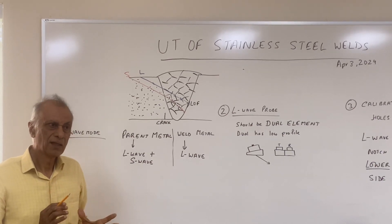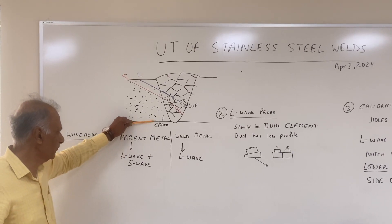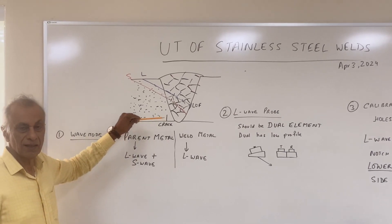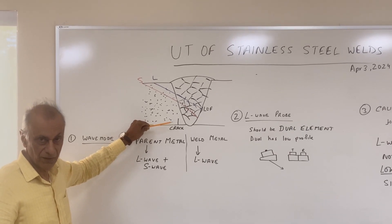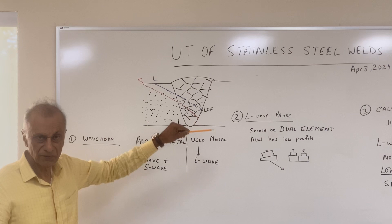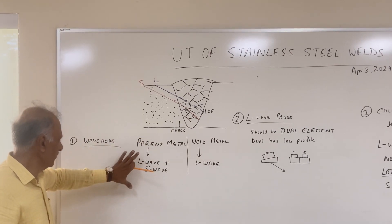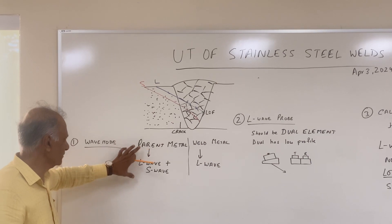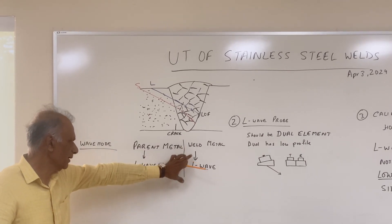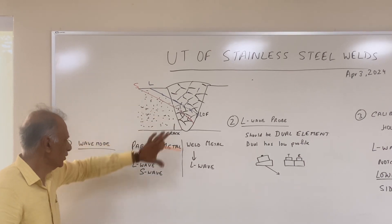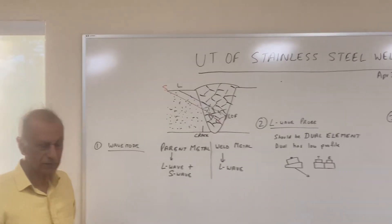Understand that the shear wave will produce a better reflection from a crack in the parent metal as compared to the L-wave — I will discuss that at the end of this lecture. So overall, for parent metal you use L-wave and shear wave, and for the weld metal you use L-wave. You have to use L-waves for sure, supplemented with shear waves.